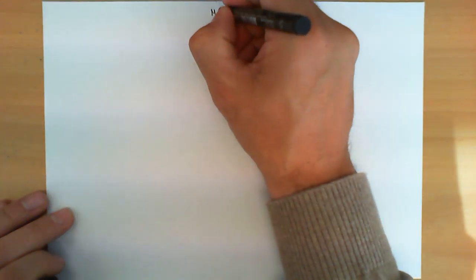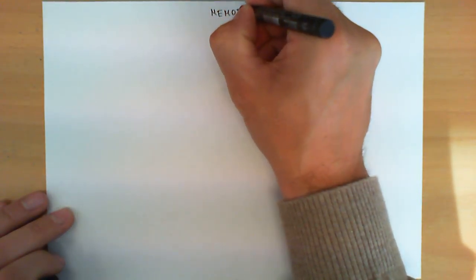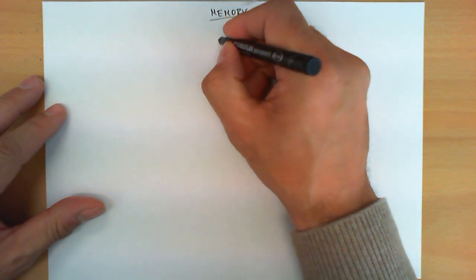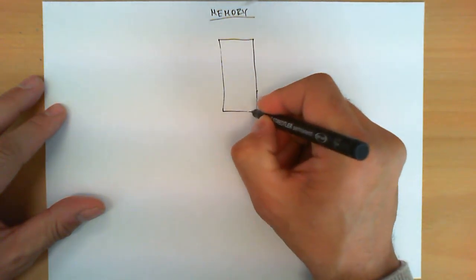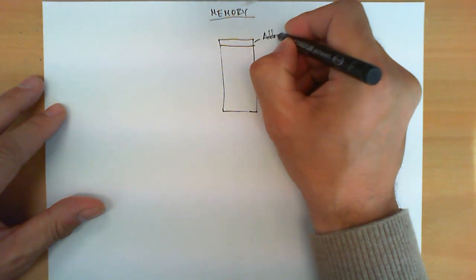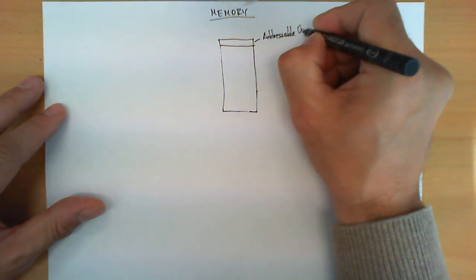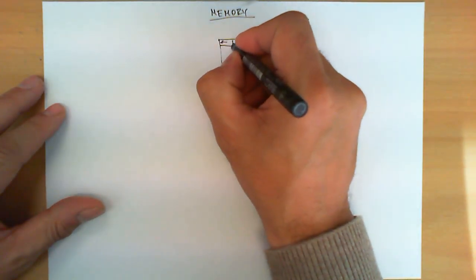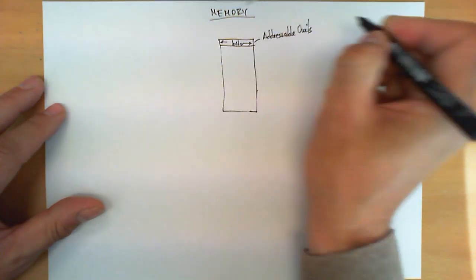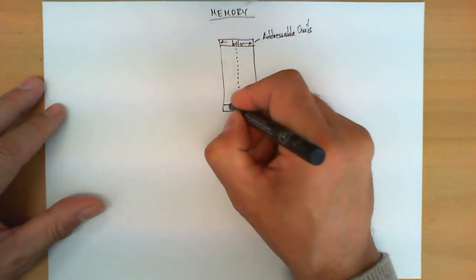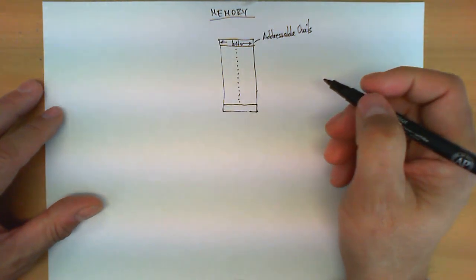So let's see exactly how memory works. A memory chip is a very simple circuit. It is comprised of a typically very large number of certain units which we're going to call addressable units. These addressable units have a certain number of bits inside and it's where the information is stored. So a memory chip is basically a collection of these addressable units.